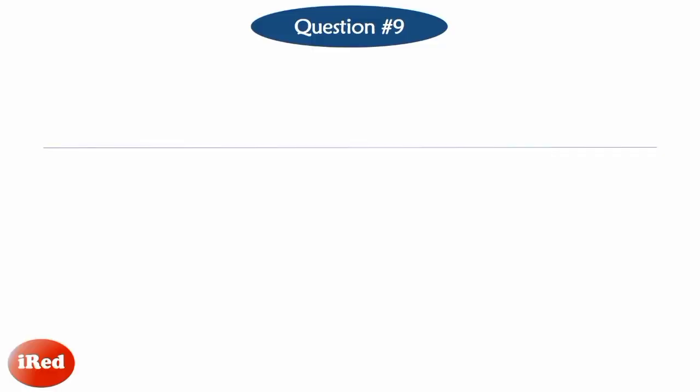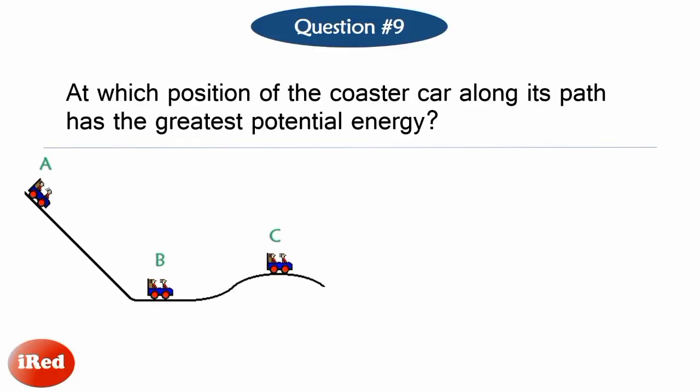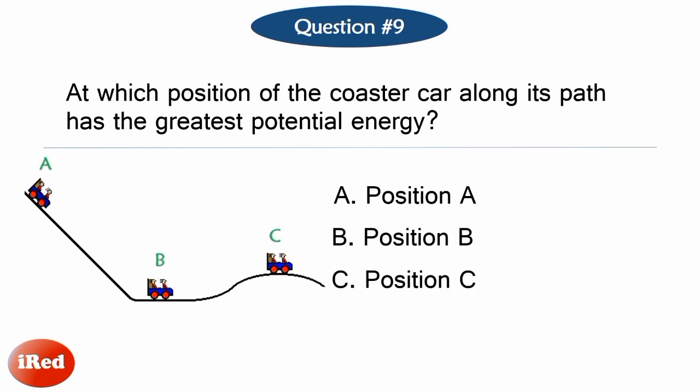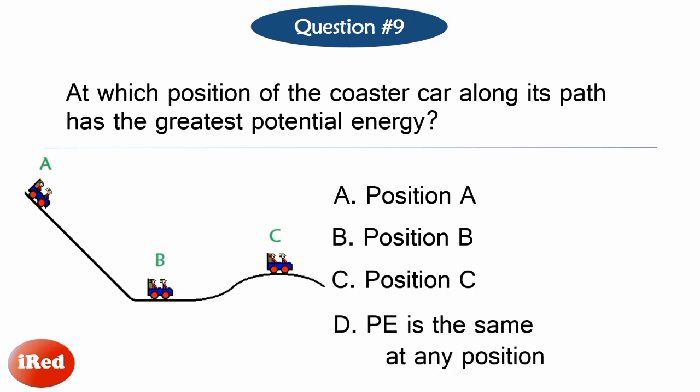Number 9. At which position of the coaster car along its path has the greatest potential energy? Letter A, position A. Letter B, position B. Letter C, position C. Or Letter D, potential energy is the same at any position.